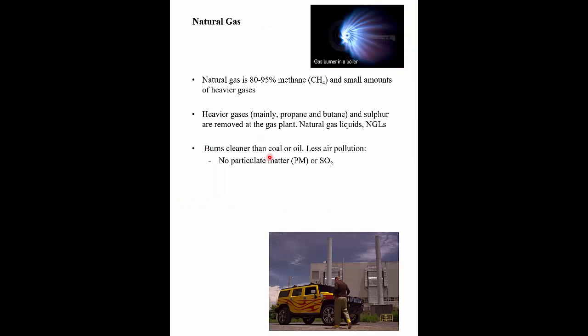Next, I'll talk about natural gas. Natural gas is mainly methane — about 80 to 95% methane depending on the well — so it's CH4, one carbon atom and four hydrogen atoms. When it comes out of the ground, it comes with small amounts of heavier gases and a bit of water vapor. The heavier gases — mainly propane and butane — and impurities like sulfur and water vapor get removed at what's called the gas plant. Natural gas that comes out of a well goes to a gas plant for treatment before it comes to your home, and the sulfur is removed so it doesn't create sulfur dioxide when burned, which is an air pollutant.